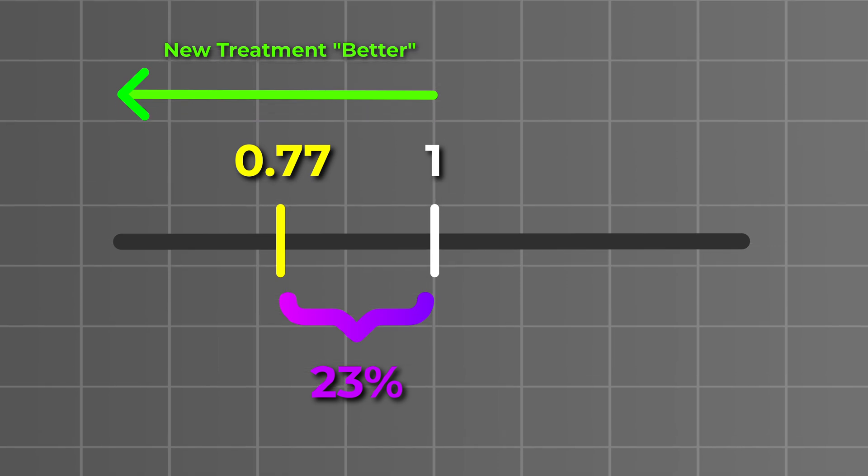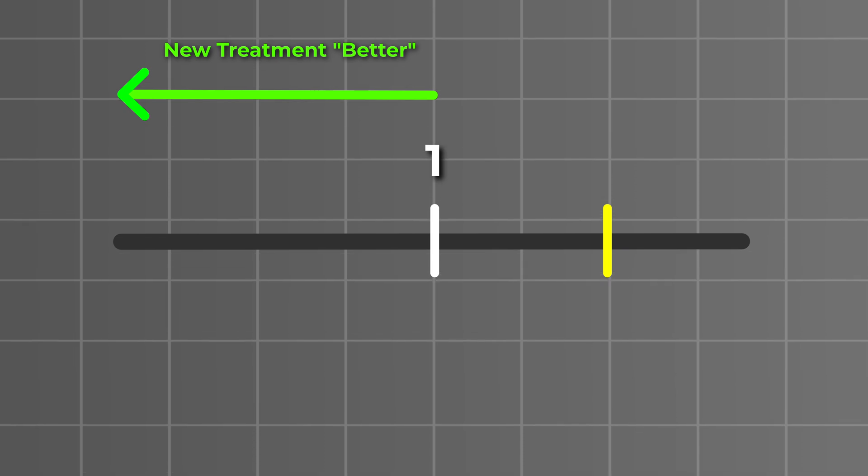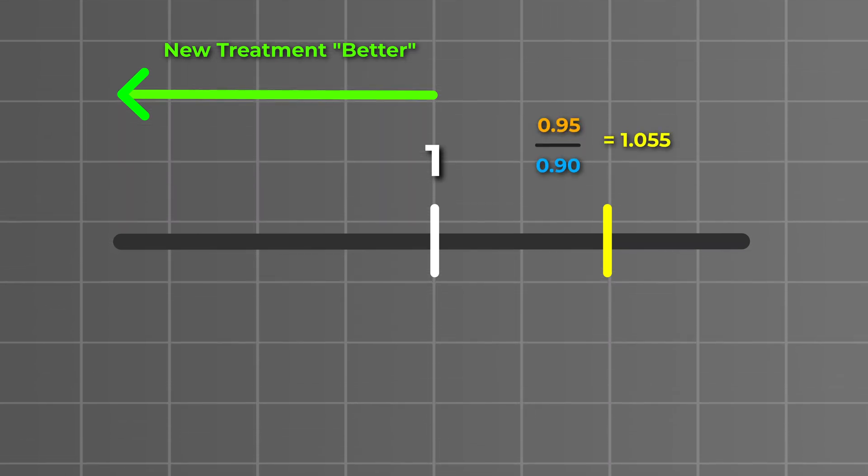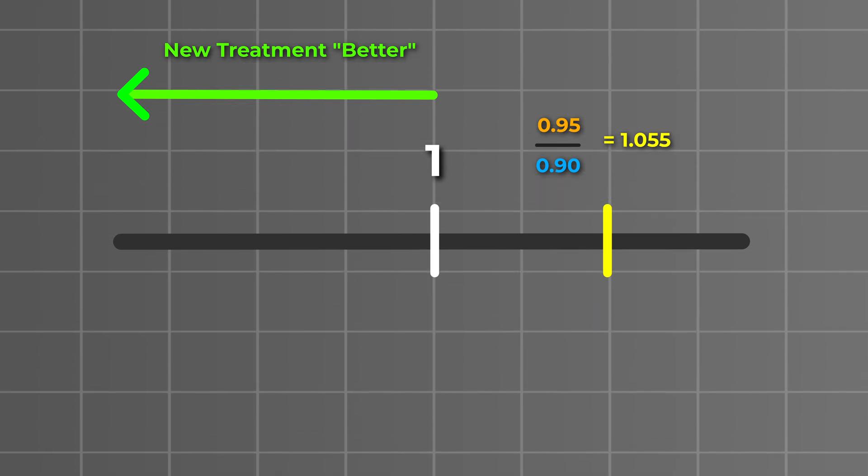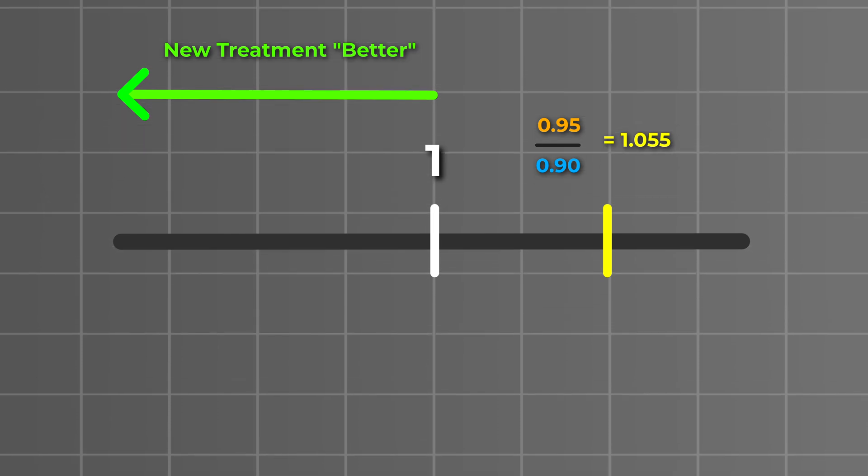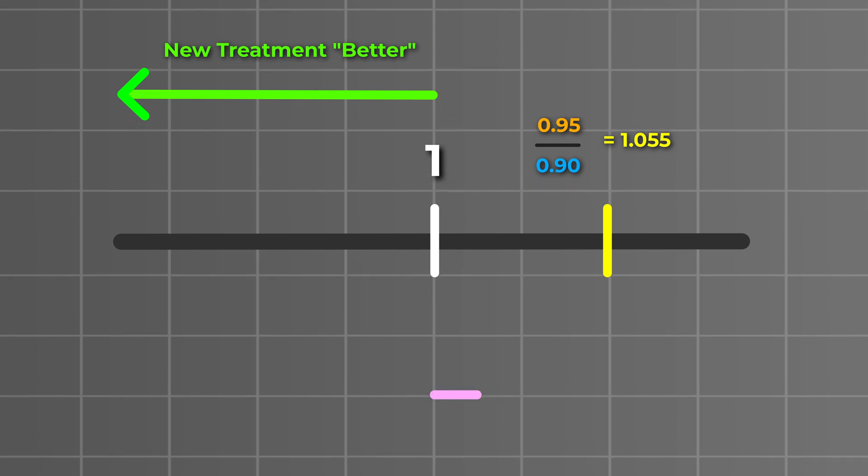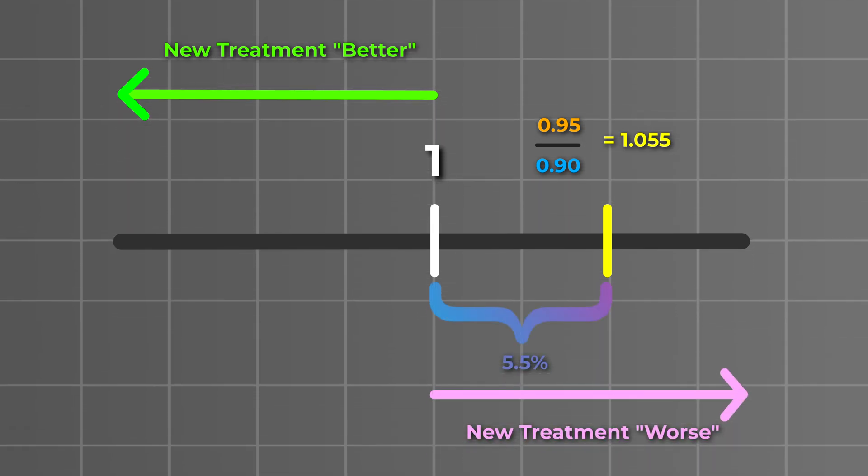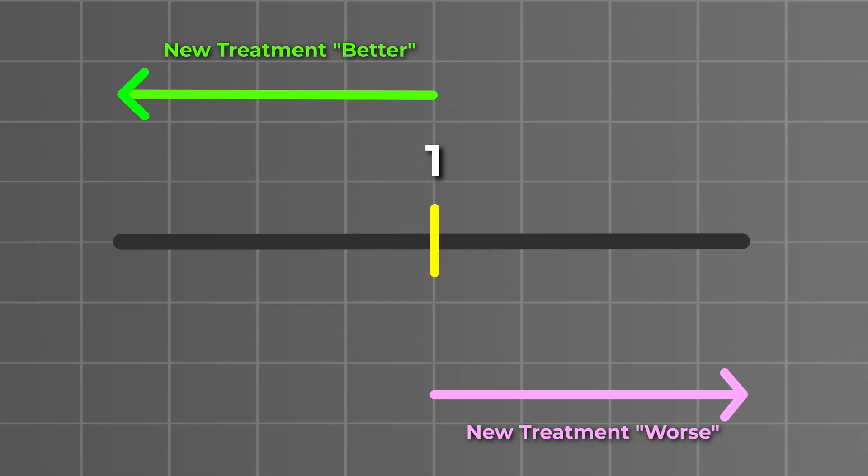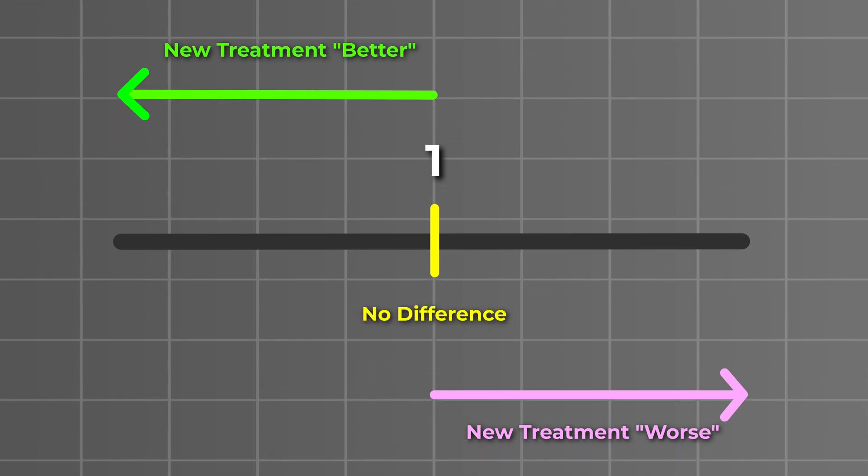On the other hand, if our new drug were less effective than the standard of care, the risk ratio would be greater than one. For example, if the new treatment resulted in a higher risk of death, say 95 percent compared to the 90 percent in the standard of care group, the risk ratio would be 0.95 divided by 0.9 equaling 1.055. In this scenario, our intervention increases the risk of death by 5.5 percent. If the risks in the exposure and control groups were identical, say both at 90 percent, the risk ratio would equal one, indicating no difference between the two treatments.